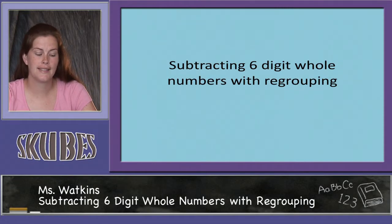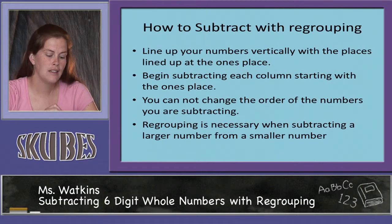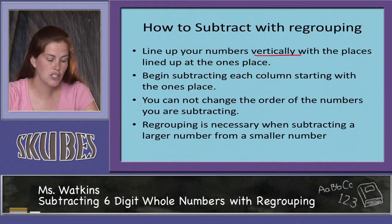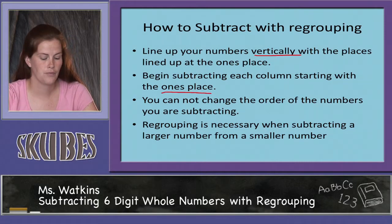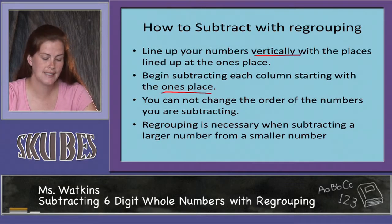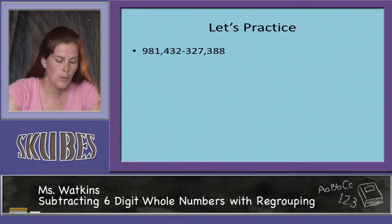Welcome to our lesson on subtracting six-digit whole numbers with regrouping. To subtract with regrouping: line up your numbers vertically making sure that the ones places are lined up, then begin subtracting each column starting with the ones place. Remember, with subtraction you cannot change the order of the numbers — they have to stay in the order they're in in the problem. Regrouping is necessary when subtracting a larger number from a smaller number.